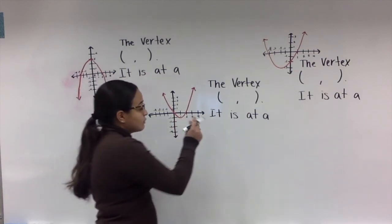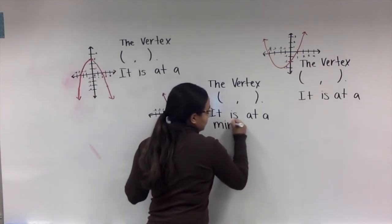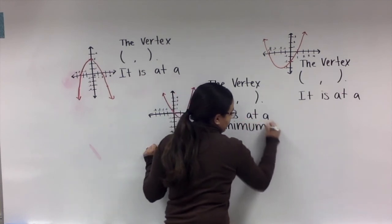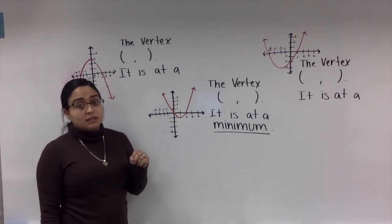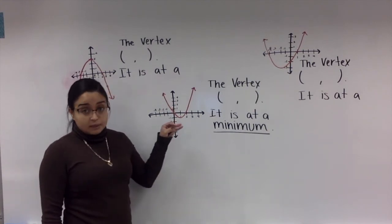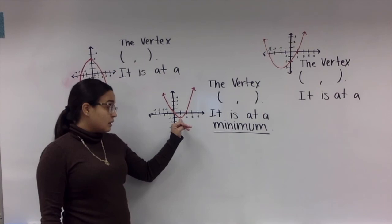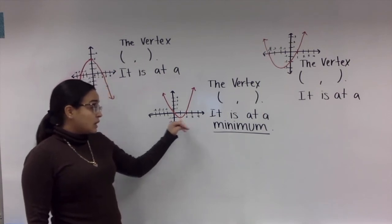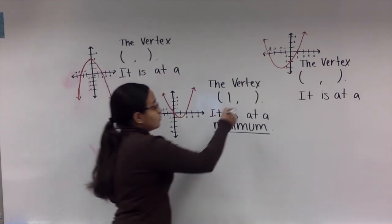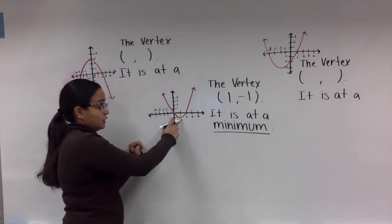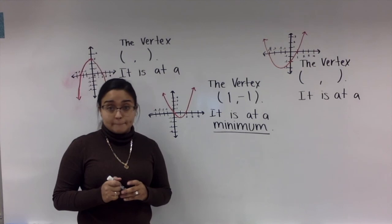So for here, for it is at a blank, it would be a minimum. That's what I'm going to put right there. So this parabola, the vertex, I'm sorry, is at a minimum. And the coordinates of the lowest point, which is right here, would be a 1 for x, right under our first line, and a negative 1 for y because it's down here. So that is the vertex and it is at a minimum.